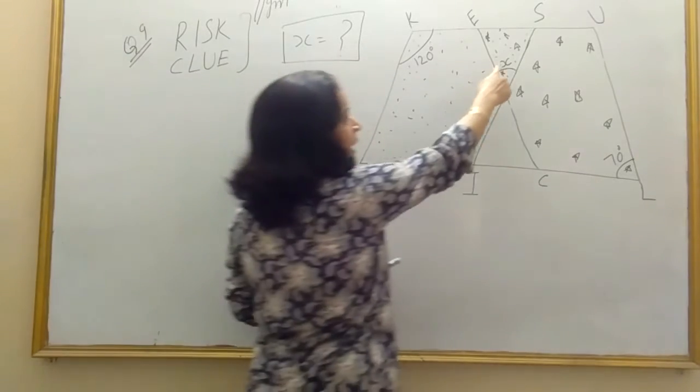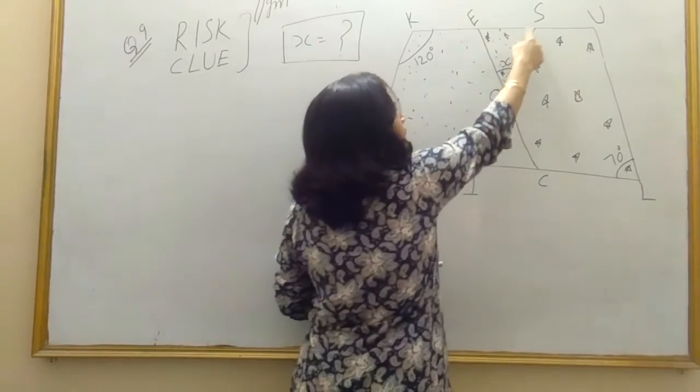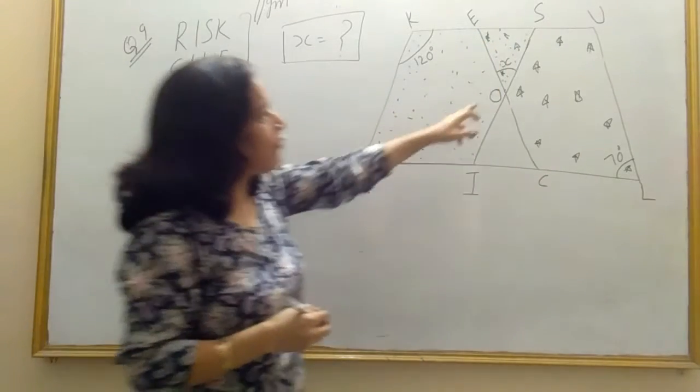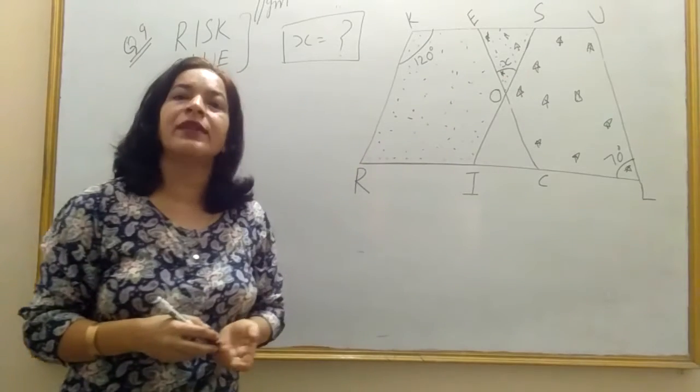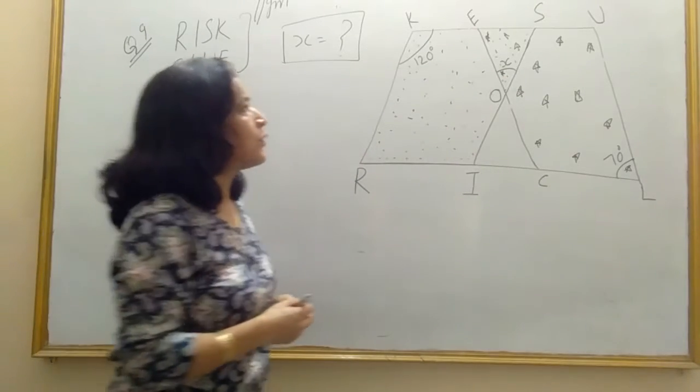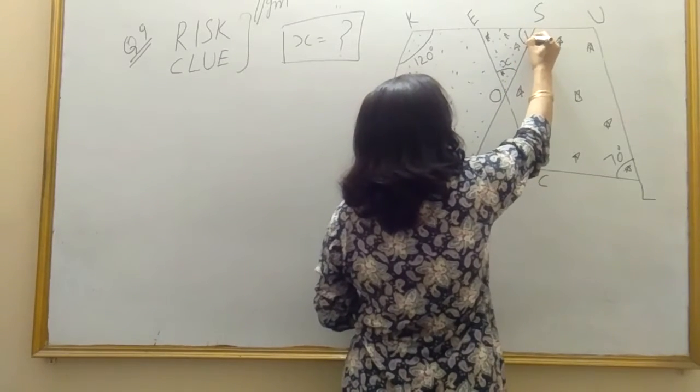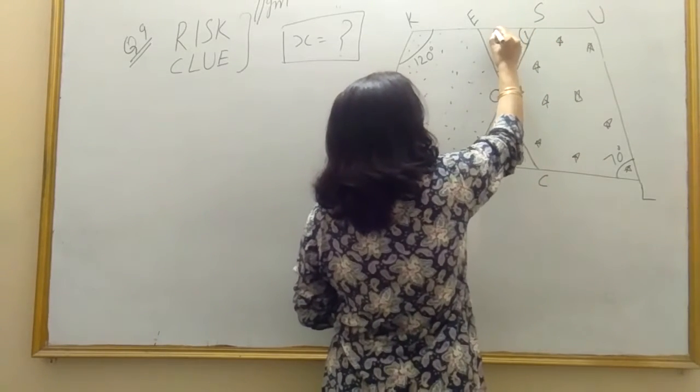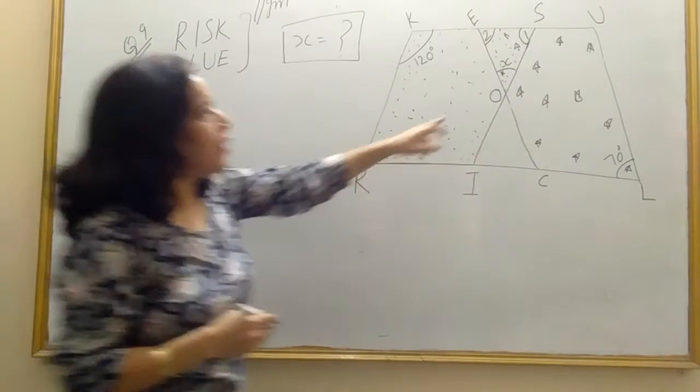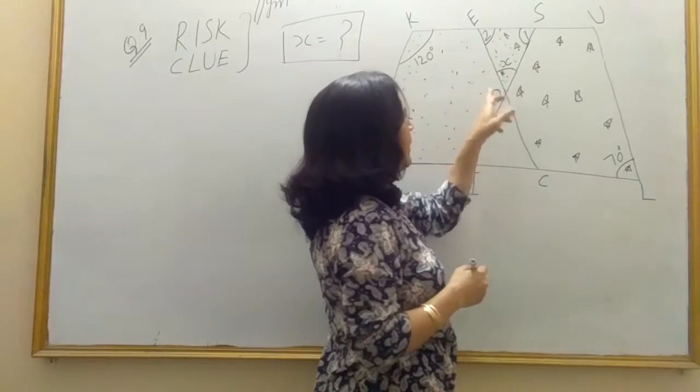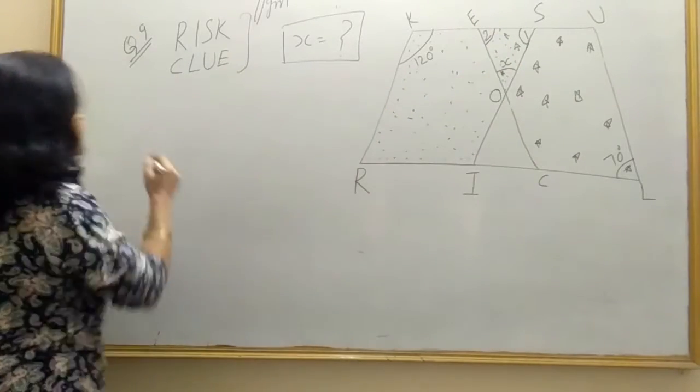Now you have to find angle X. Angle X is in this figure triangle. It means you have to find one angle of triangle, then you should know the other two angles. So to find this angle S, give it name 1 and it's 2. Angle O-S-E-1 and angle O-E-S-2.